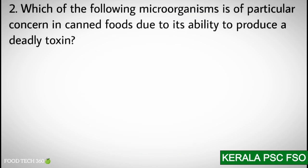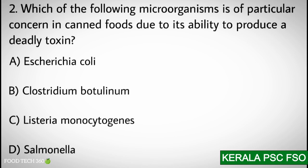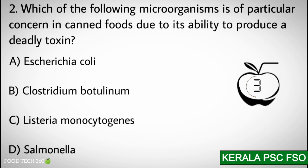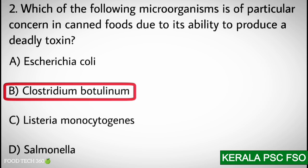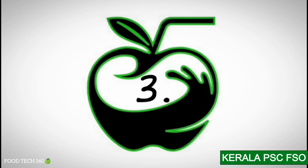Q2. Which of the following microorganisms is of particular concern in canned foods due to its ability to produce a deadly toxin? Options: A) Escherichia coli, B) Clostridium botulinum, C) Listeria monocytogenes, D) Salmonella. Correct answer: B) Clostridium botulinum.